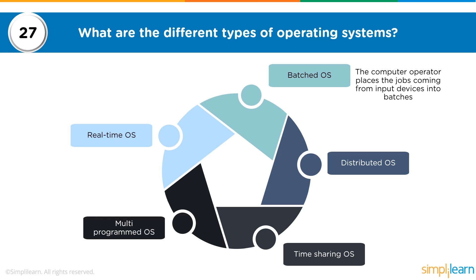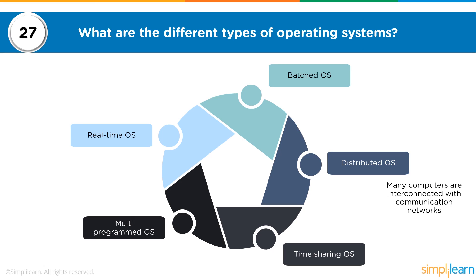The next question is: what are the different types of operating systems? There are five types: Batch OS, Distributed OS, Time-Sharing, Multi-programmed, and Real-Time. In a Batch OS, the computer operator places jobs from input devices into batches — used in server environments where organizations compute and crunch multiple processes. A Batch OS places these jobs in batches and processes them based on operator inputs.